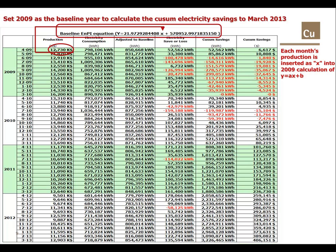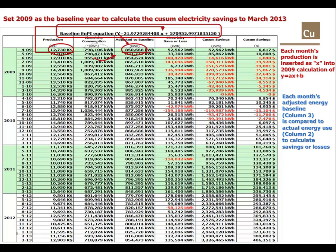Here, the April 2009 baseline adjusted to actual production figures is a little over 850,600 kilowatt hours. Next, the month's adjusted energy baseline is compared to the actual energy use to calculate a saving or loss. Here the saving in April 2009 was a little more than 52,500 kilowatt hours.